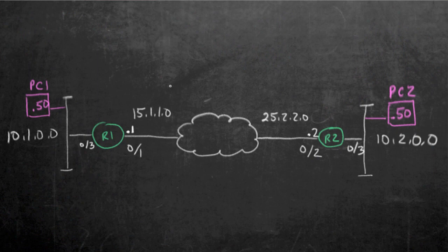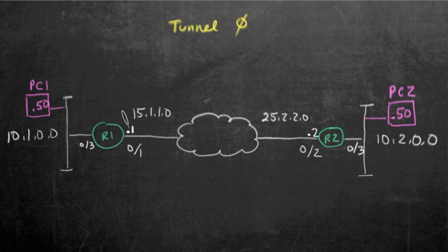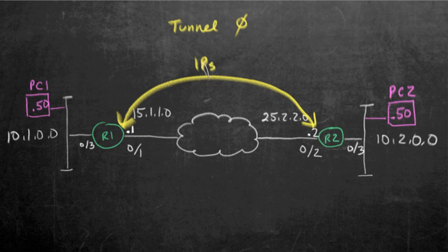For our GRE tunnels, let's plan on using tunnel interface number 0 for both sites. For the tunnel itself, we're going to start the tunnel from this reachable address of 15.1.1.1 to 25.2.2.2. I'll put little arrows there for the IPs for the start and end of the tunnel.